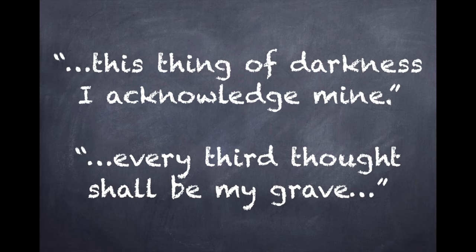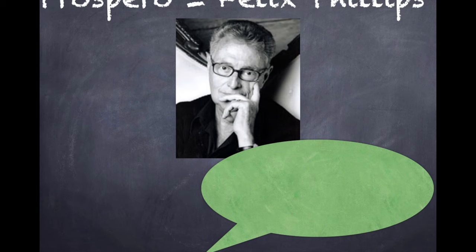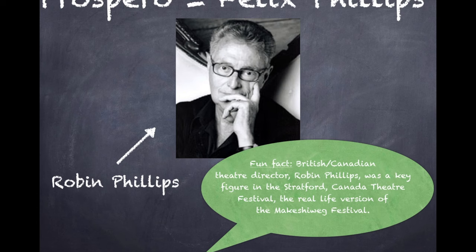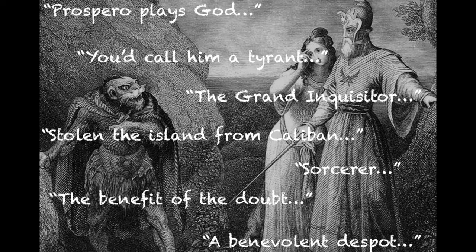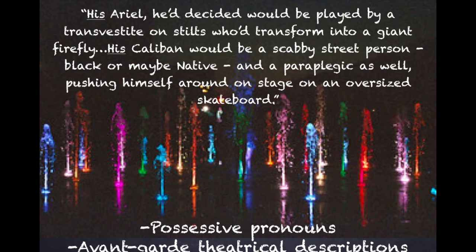So how does Atwood take this interpretation of the transformed Prospero and re-conceptualise it in her character of Felix? In her book Negotiating with the Dead, Atwood wrote: 'Prospero plays God. If you don't happen to agree with him, as Caliban doesn't, you'd call him a tyrant. With a slight twist, Prospero might be the grand inquisitor, torturing people for their own good. You might also call him a usurper — he's stolen the island from Caliban, just as his own brother has stolen the dukedom from him. And you might call him a sorcerer, as Caliban also terms him. We, the audience, are inclined to give him the benefit of the doubt and to see him as a benevolent despot. Or we are inclined most of the time.'